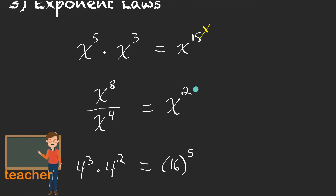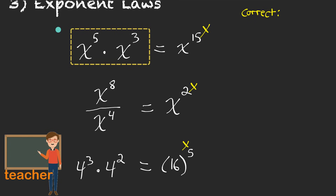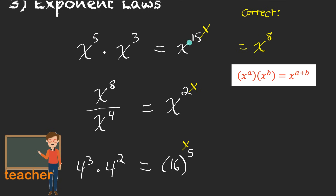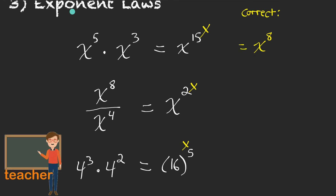All three of these are incorrect. For the first one: we do have powers of x being multiplied together, and when you're multiplying powers with the same base, you keep that base of x. But you add the exponents — 5 plus 3 is 8. So we'd have x to the 8. And if you want to see why, you can write it out in factored form: x to the 5 means x times x times x times x times x, and we have to multiply that by x cubed, which means three more factors of x. If you look at how many x's we have there being multiplied together, there are eight of them — x to the 8.